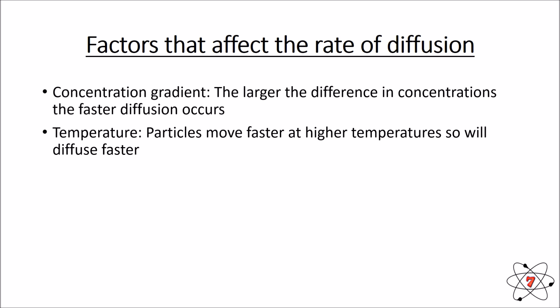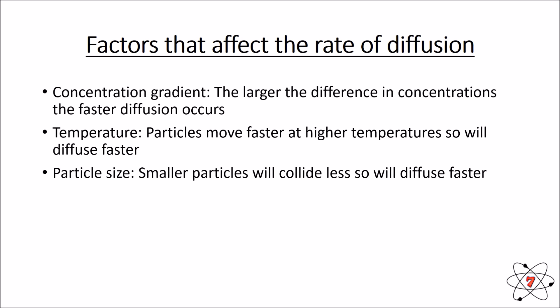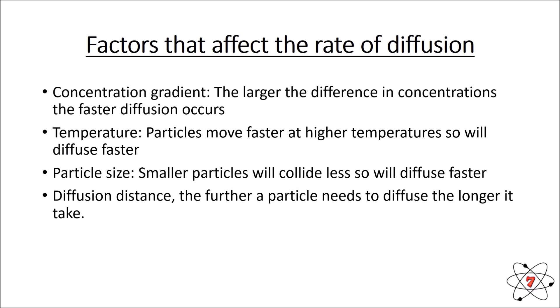The higher the temperature, the faster the rate of diffusion. As temperature increases, the kinetic energy of particles increases and they move faster — so they diffuse faster. Particle size is also important: bigger particles diffuse slower than smaller particles, because bigger particles collide more and are stopped by those collisions. The final factor is diffusion distance — if a particle has to diffuse a long way, it takes a long time. This is why the cell membrane is so thin: it reduces the diffusion distance, allowing diffusion to take place quickly.